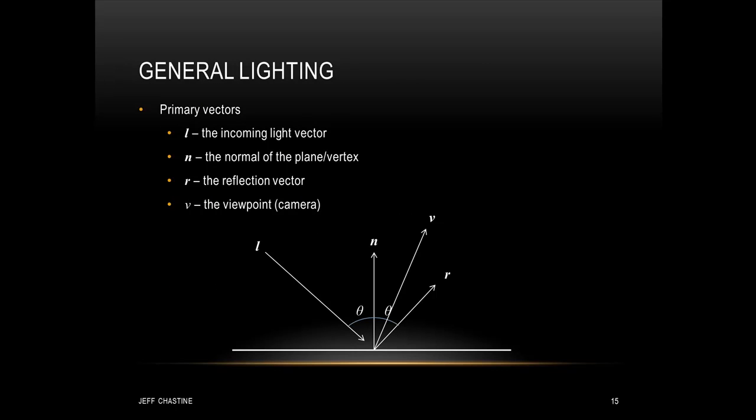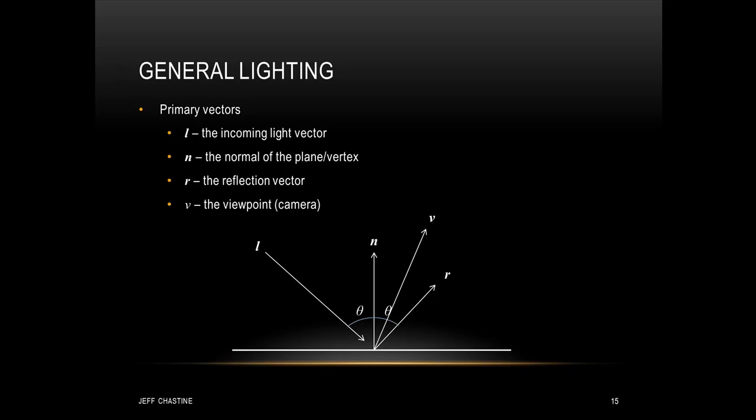Now we're going to have four primary vectors that we're going to be working with. There's L, which represents the incoming light direction. There's N, which represents the normal of a vertex or even a pixel. You also have R, which is the reflection vector. And notice that the reflection vector is actually just the mirror image of L. And finally, we have vector V, which represents the viewpoint of the user. In other words, it's the camera.